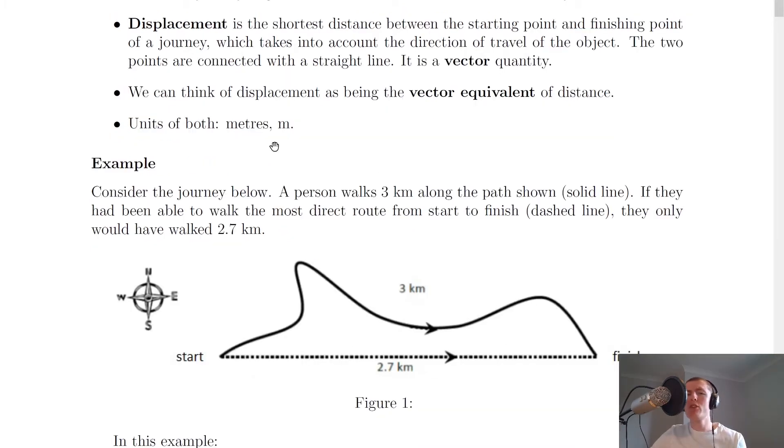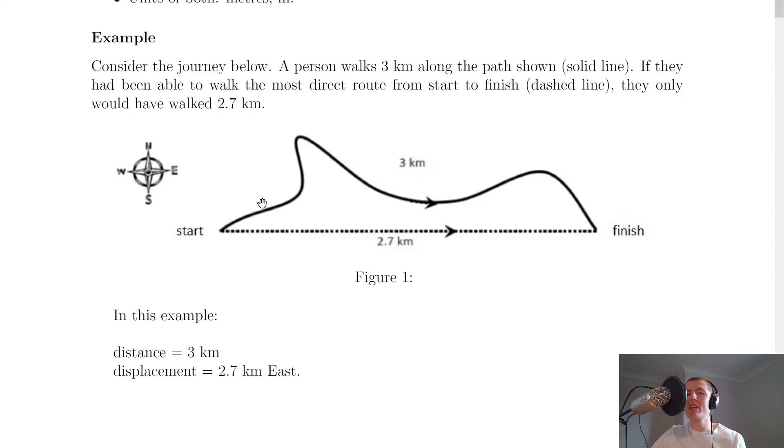And we should remember that both distance and displacement are measured in meters. So let's look at this example now. It says to consider the journey below. A person walks 3 km along the path shown, which is this solid line here.